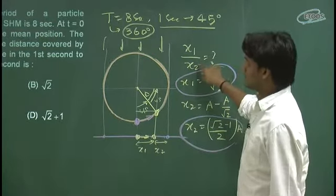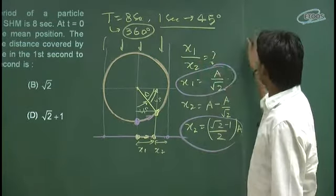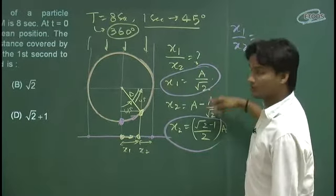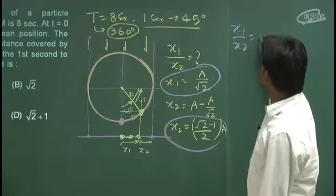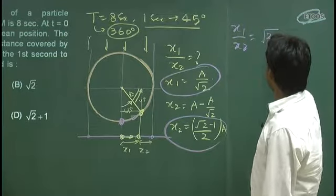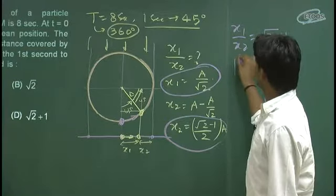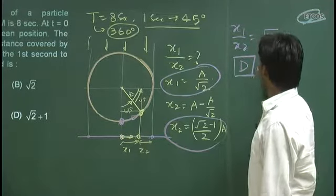Agar main x1 or x2 ko solve karunga, to solve karne ke baad a jayega. x1 by x2 ko agar aap solve karoge, to thoda sa solve karne ke baad aap ka option D correct aa jayega. Ye aa jayega root 2 plus 1. To option yaha pe aap ka D correct aa jayega.